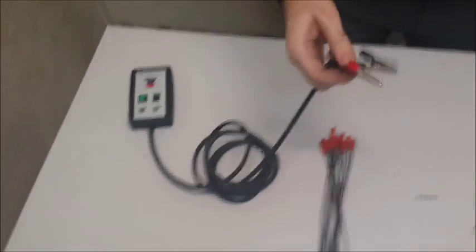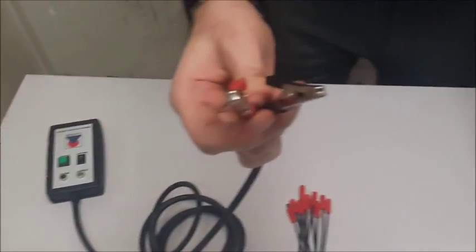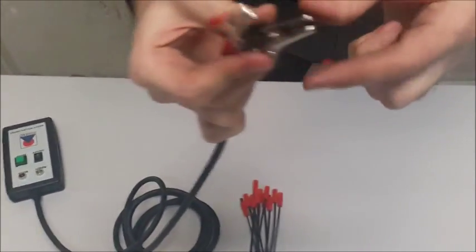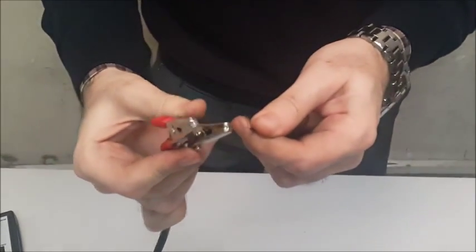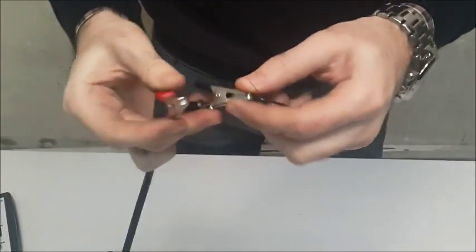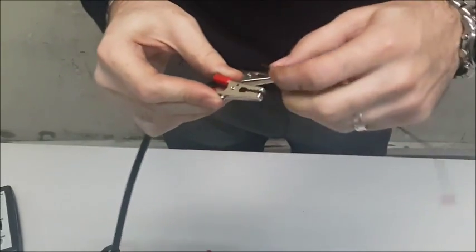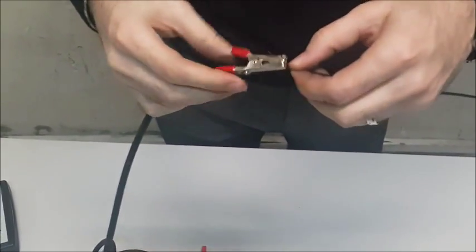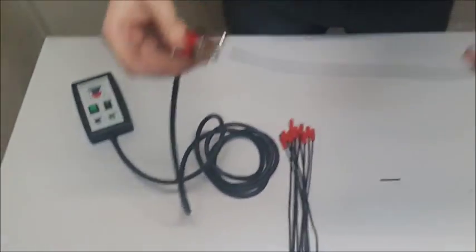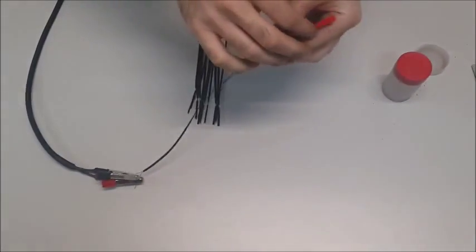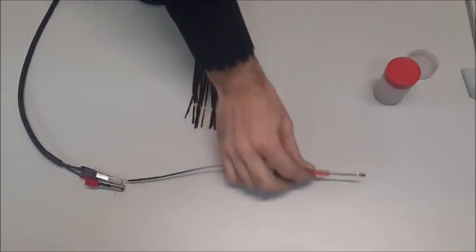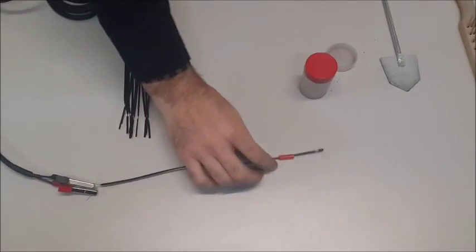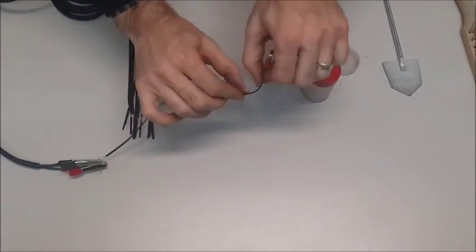The electric igniter has two meters of wire to it, so that it can actually be used from a distance safely. Next step is to place the fuse inside the cap on the exothermic welding mold.